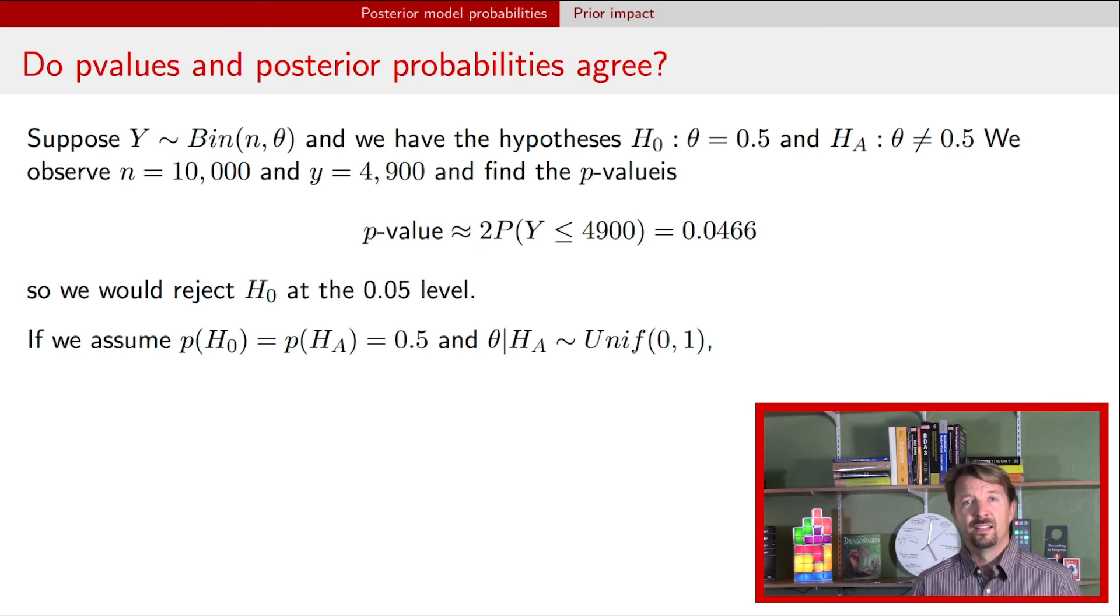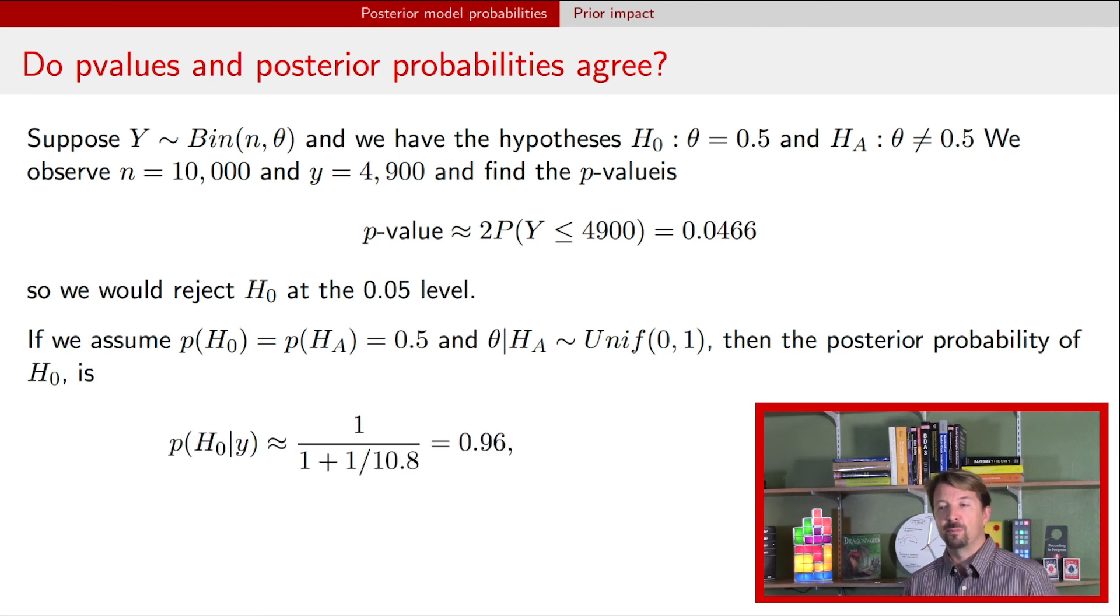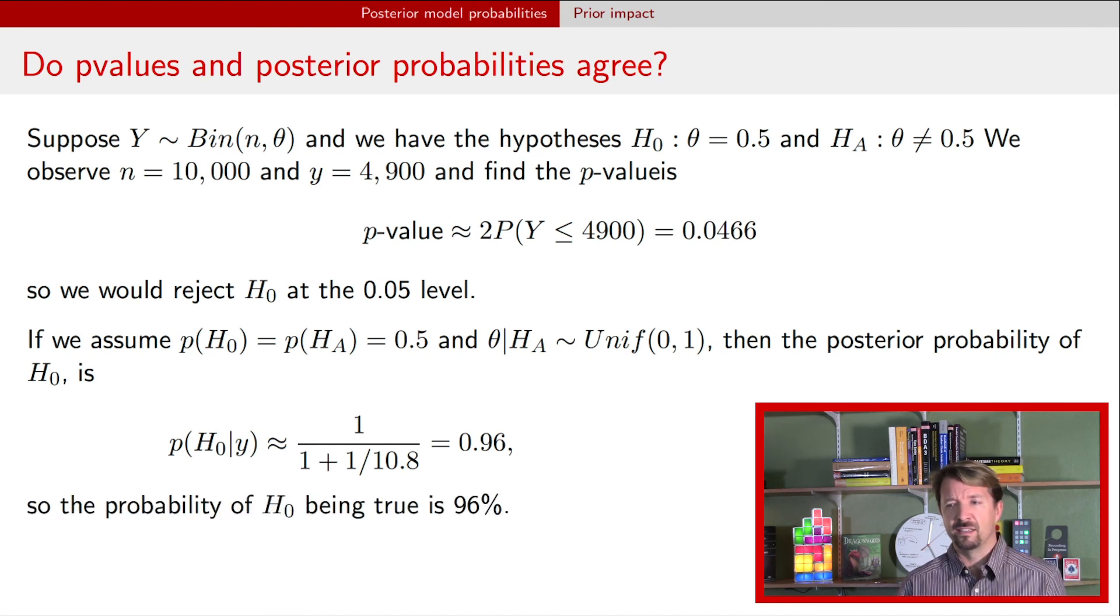And now if we calculate the posterior model probability associated with these assumptions, we find that the posterior model probability is about 0.96. So that is, given the data you've observed and the priors that you've made as a Bayesian, you have a belief that the null is true with 0.96 probability.